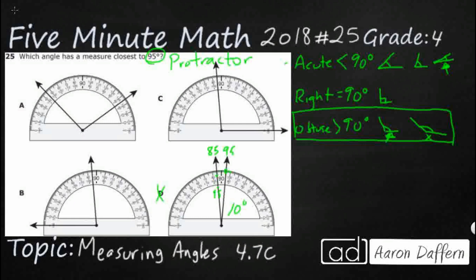B looks just a little bit less than 90 right here, so it looks like an acute angle just barely. Let's go ahead and measure it. We've got a line on zero, so counting up: 10, 20, 30, 40, 50, 60, 70, 80 — it's right between 80 and 90, so that's an 85-degree angle, just below a right angle. The reason this is incorrect is that on the inside scale you'd see 95 between 90 and 100, but for that to be valid the line would have to go out the other way. The inside starts from the right; the outside starts from the left.